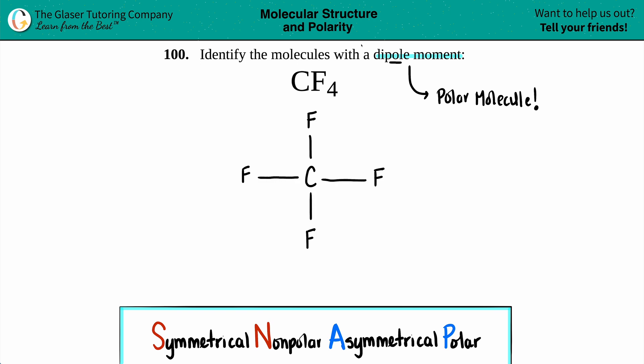There we go. And then each fluorine has six dots around it giving it the octet. And last fluorine.